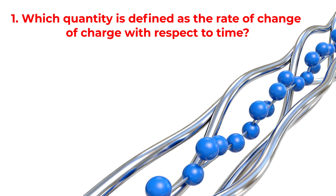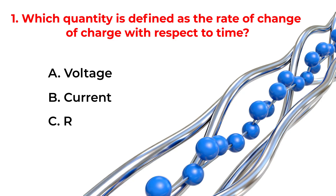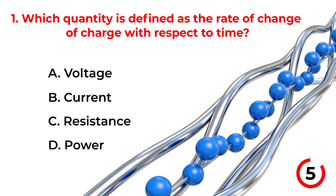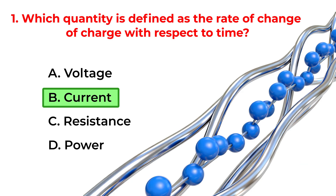Which quantity is defined as the rate of change of charge with respect to time? A. Voltage. B. Current. C. Resistance. D. Power. Correct answer is option B. Current.